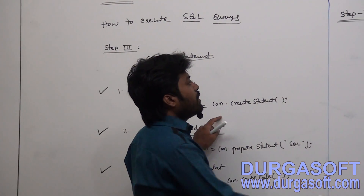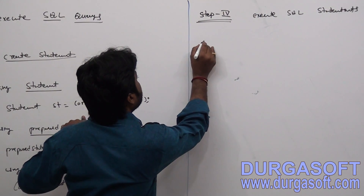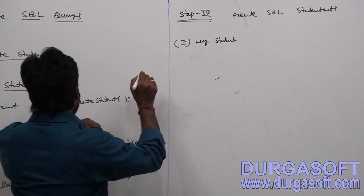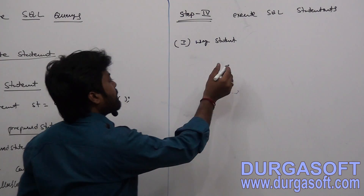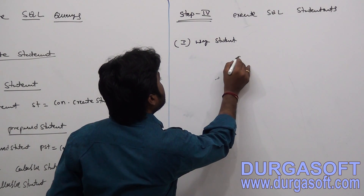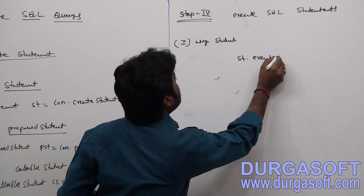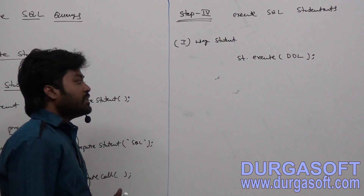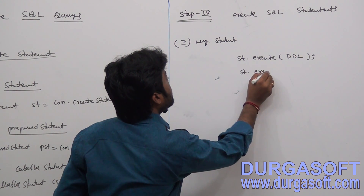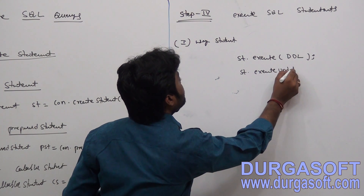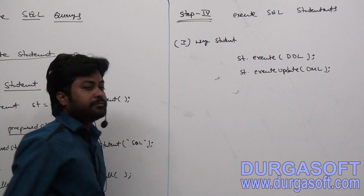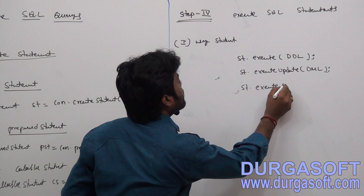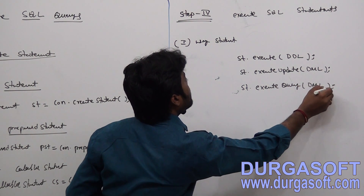Using Statement, if you want to execute SQL queries, we have three methods. First, statement.execute() — here you need to pass DDL. There is one more method, statement.executeUpdate() — here you need to pass DML. And there is one more method, statement.executeQuery() — here you need to pass DRL.